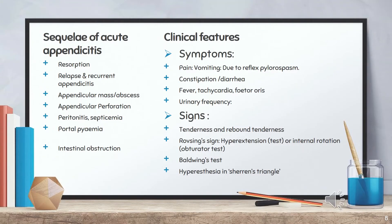Sequelae of acute appendicitis include: resorption, relapse and recurrent appendicitis, appendicular mass, appendicular abscess, perforation, peritonitis, septicemia, portal pyemia, intestinal obstruction due to obstructive ileus, inflammatory adhesions, and formation of bands between the appendix and omentum or between the appendix and small bowel.